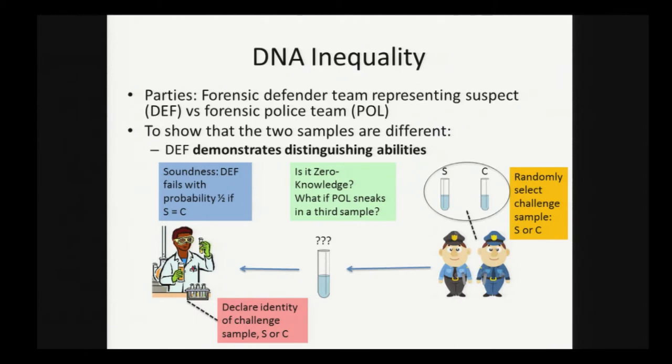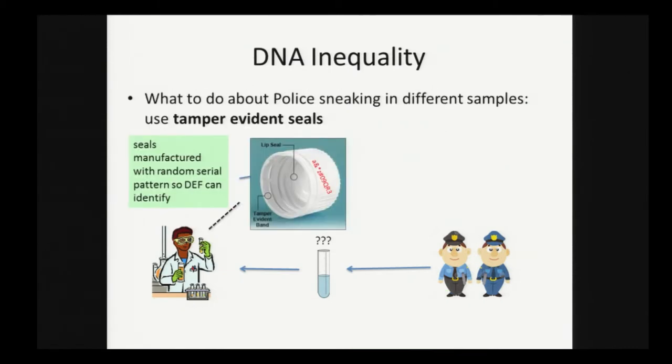But is it actually zero-knowledge? What if the police sneaks in a third sample? You have the same problem with the graph non-isomorphism with the third graph. And is it actually sound? An even worse question. What if there are differences between S and C that just have to do with contamination in the samples and have nothing to do with the actual sample profiles? We're going to try and fix these problems.